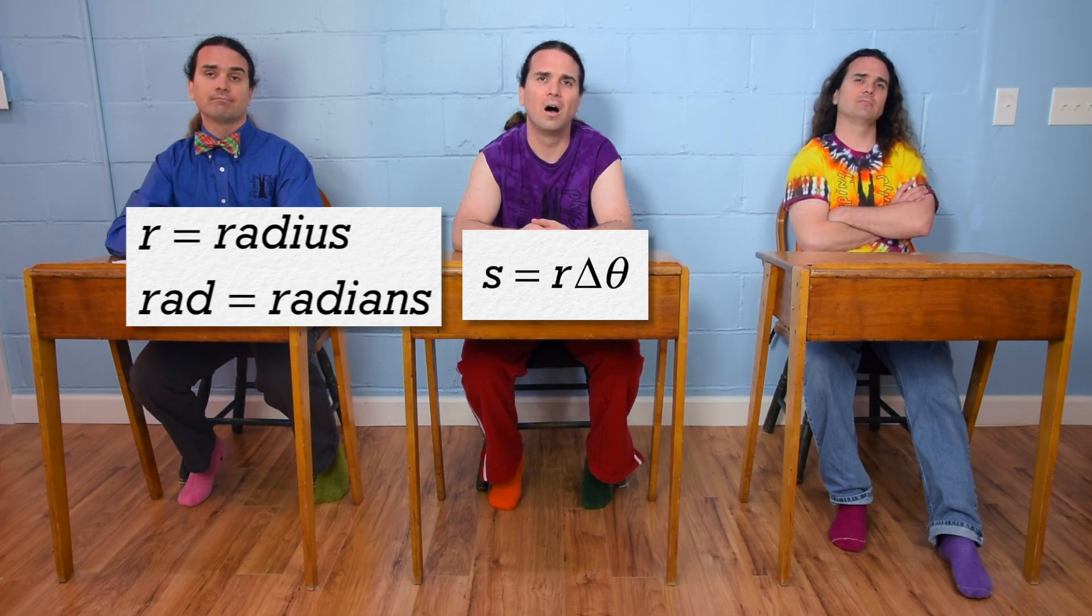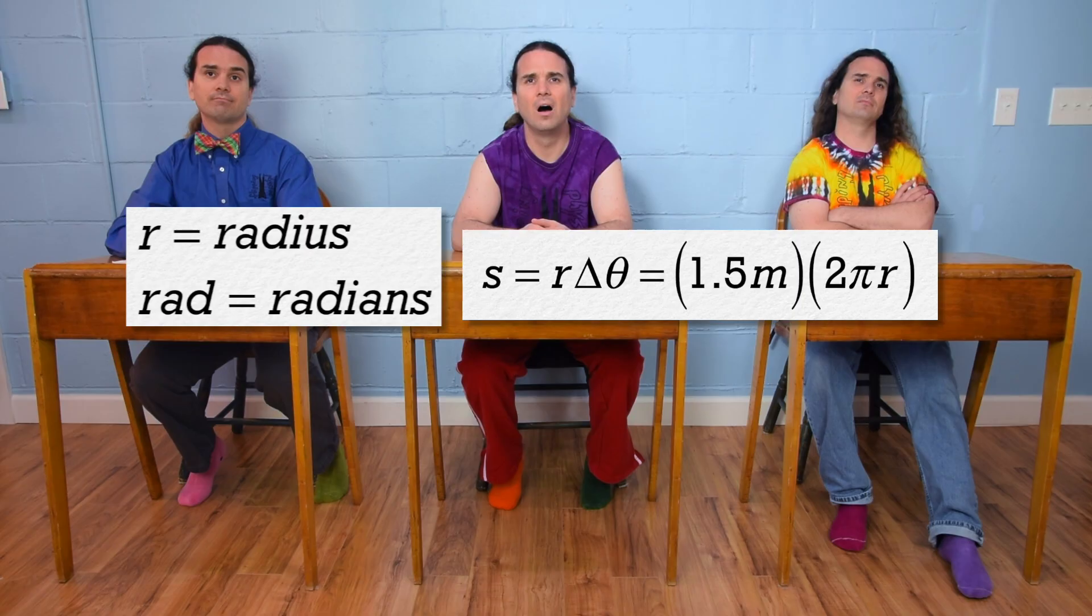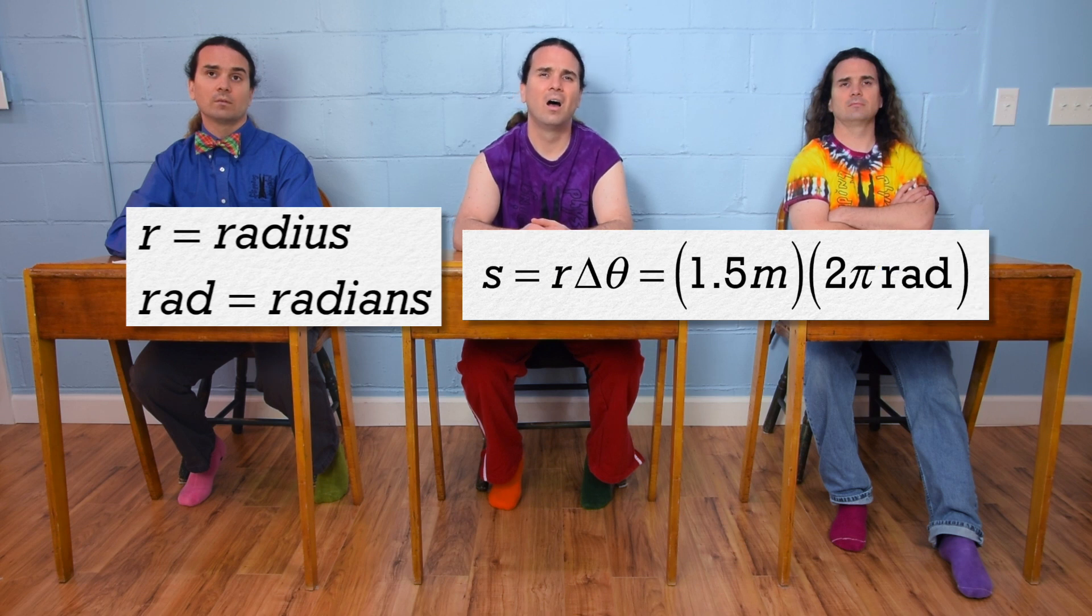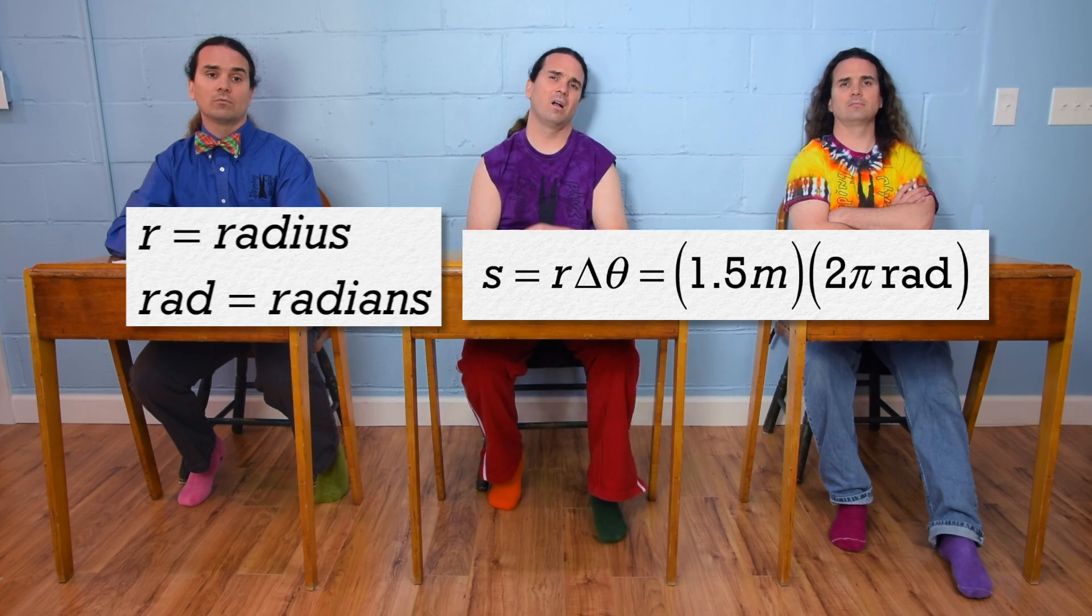If we substitute in known variables like 1.5 meters and 2 pi radians and use R to represent radians, then we have two Rs in the same equation representing two different things. If we write R, A, D for radians instead of R, this is actually much less confusing.